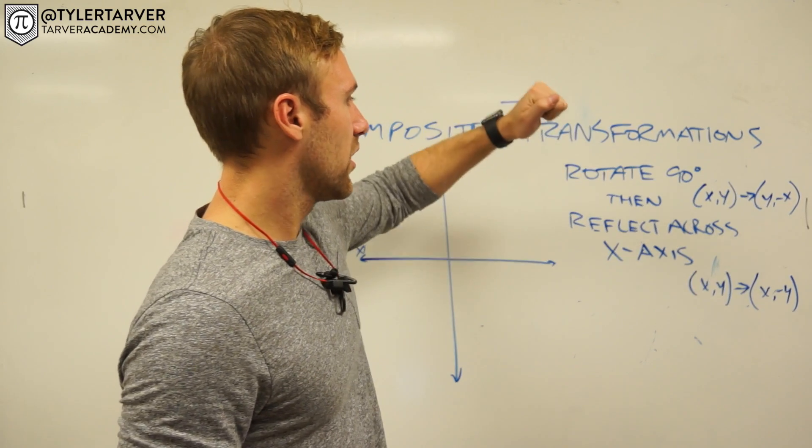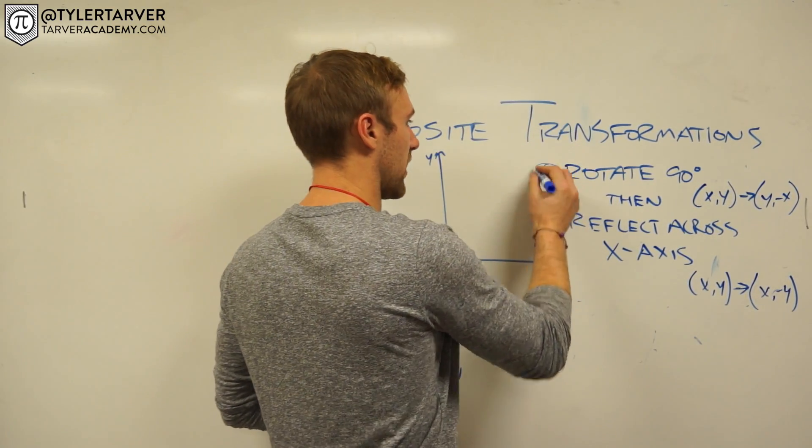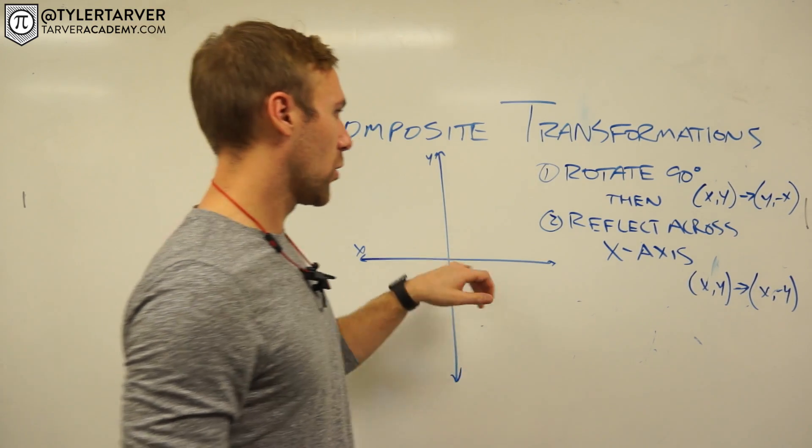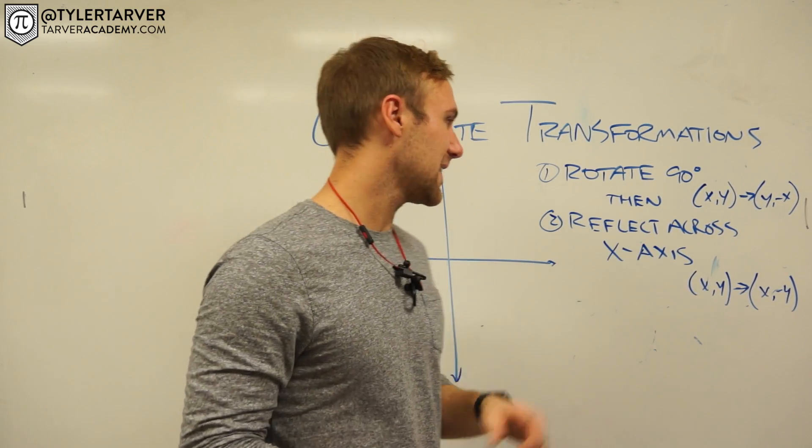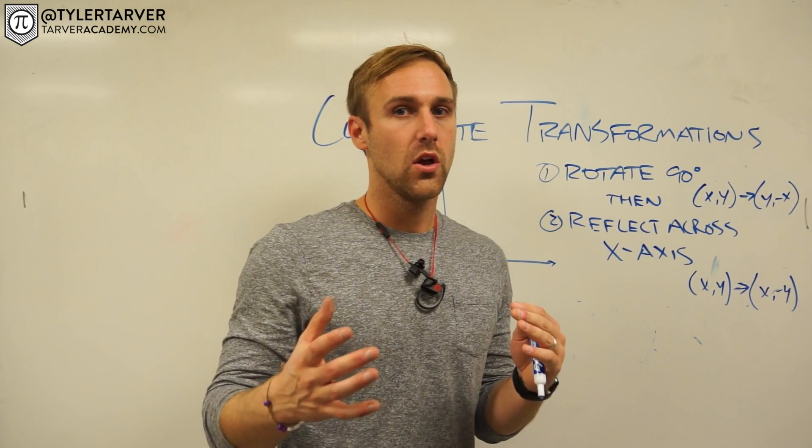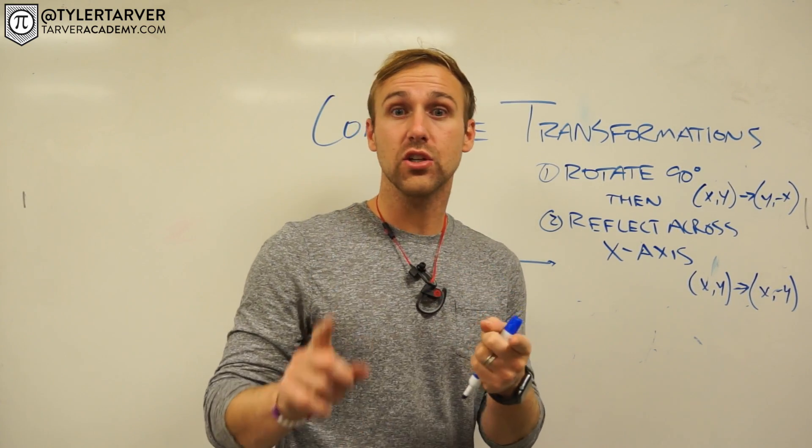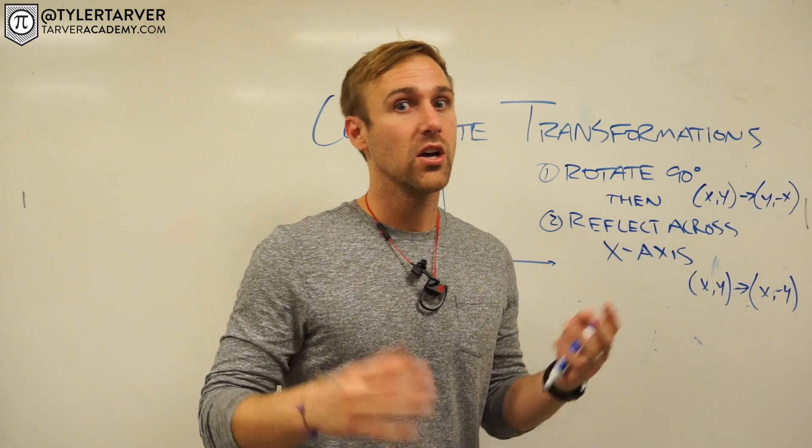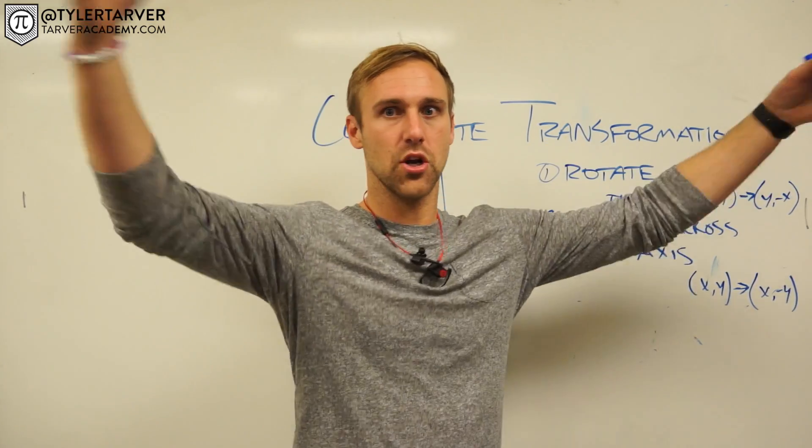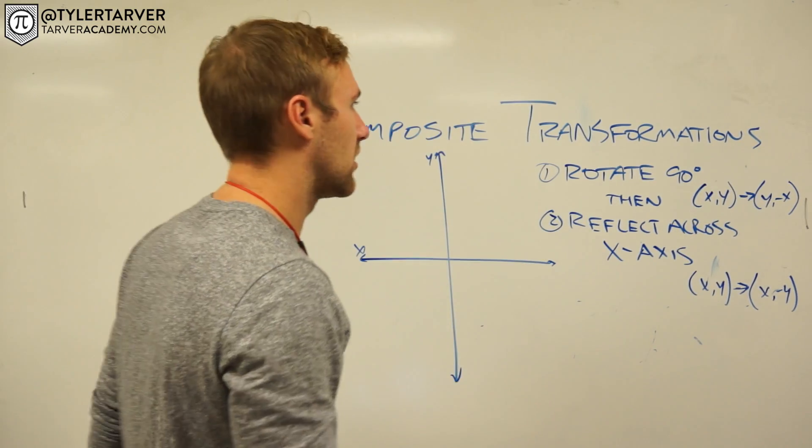I've got an example here. We're going to do two transformations. We're going to rotate this 90 degrees around the origin and then we're going to reflect it across the x-axis. Okay, so really as long as you know how to do a translation, you know how to do a reflection, you know how to do a rotation, you're going to be fine. Just don't get confused and don't mess up early on or else it's going to snowball and you're going to get way off.